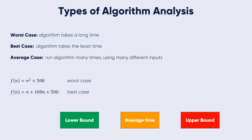The average case provides a prediction about the running time of the algorithm. Run the algorithm many times using many different inputs from some distribution, compute the total running time, and divide by the number of trials. Assume that the input is random — the average time is determined accordingly.